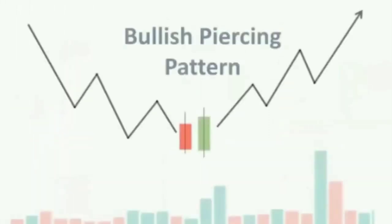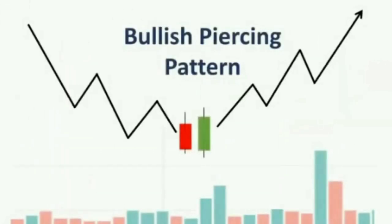The first type in the piercing pattern is the bullish piercing pattern. This candlestick pattern is not very different from the bullish engulfing pattern — the only change is in the position of the green candle, which has moved slightly up. Otherwise these two patterns are almost the same, and both indicate a bullish reversal. A bullish piercing pattern with very good volume indicates a very strong bullish reversal — meaning the downtrend will be converted into an uptrend.